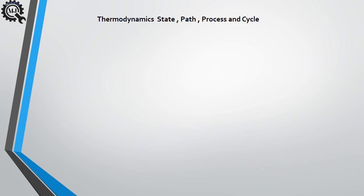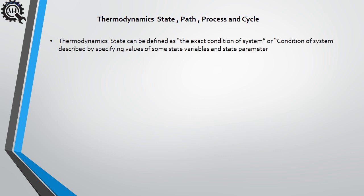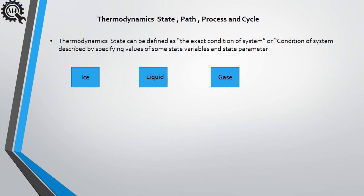Thermodynamic state, path, process and cycle. Thermodynamic state can be defined as the exact condition of a system, described by specifying values of some state variables and state parameters. Taking an example of three systems: first is ice (solid), second is liquid, and third is gas. The condition of the first system is solid state, the second is liquid state, and the third is gaseous state — these are the conditions of the system at a particular moment.